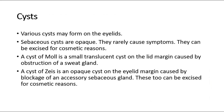Besides that, various cysts may form on the eyelids. Sebaceous cysts are opaque; they rarely cause symptoms and can be excised for cosmetic reasons. A cyst of Moll is a small translucent cyst on the lid margin caused by obstruction of a sweat gland. A cyst of Zeiss is an opaque cyst on the eyelid margin caused by blockage of an accessory sebaceous gland.